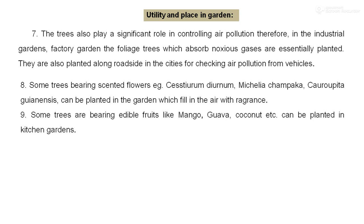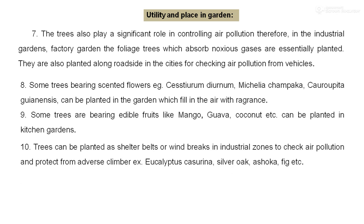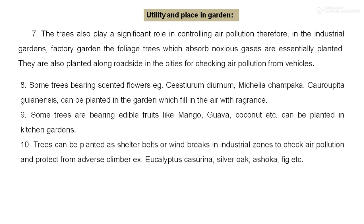Some trees bearing edible fruits, like mango, guava, and coconut, can be planted in a kitchen garden. Trees can also be planted as a shelter belt or windbreak in an industrial zone to check air pollution or to protect from adverse climate. For example, eucalyptus, casuarina, silver oak, and ashoka are well-known examples of plants used for shelter belts and windbreaks.